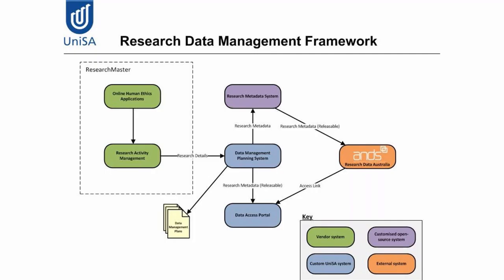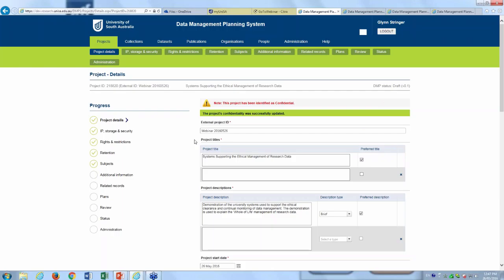Research Master is our research administration system, and that's where we manage online human ethics applications and research activities. Research details are passed through to our data management planning system, and then metadata is passed to our research metadata system, which in turn puts information up to Research Data Australia. Importantly, we only pass metadata that is releasable, because researchers may have information they don't want to share until they've completed their research project.